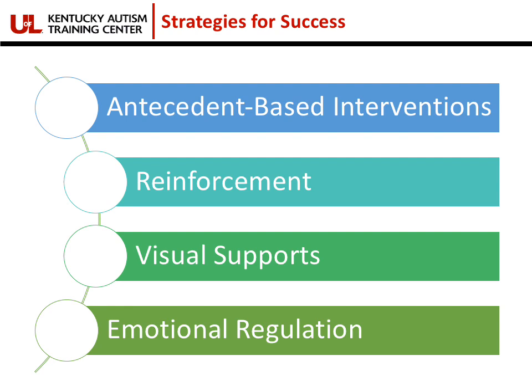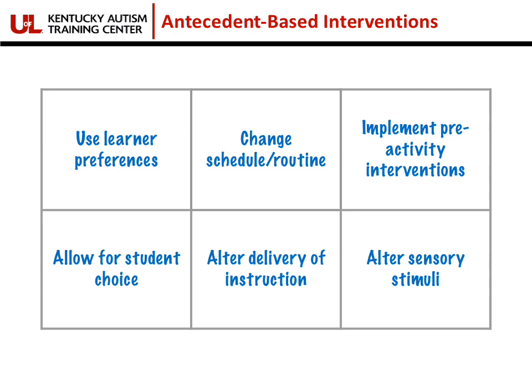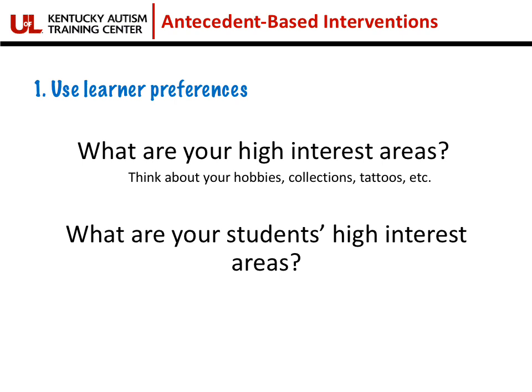There are four main strategies to support the success of your students with autism that we will talk about. The first one is antecedent-based interventions. Basically, it's doing everything you can ahead of time to set students up to be successful — trying to eliminate or reduce some triggers or anxieties, or set up scenarios that provide opportunities for replacement behaviors. It's setting up events or circumstances before an interfering or problem behavior even has a chance to occur. There are six main types of antecedent-based interventions.